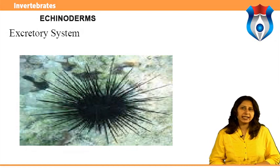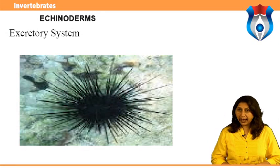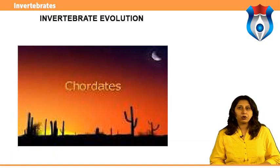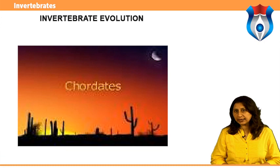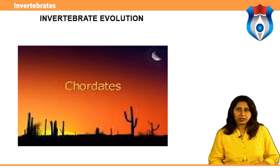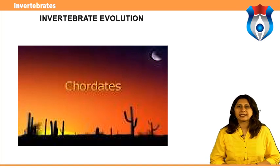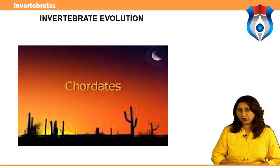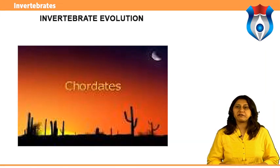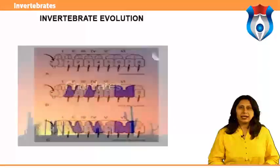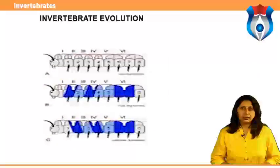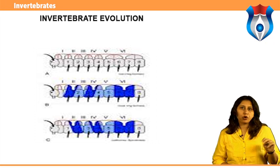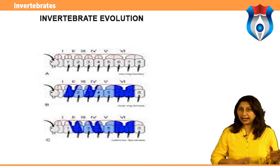Chordates are coelomate animals possessing a supporting rod or notochord, a single hollow dorsal nerve cord, metameric segmentation, pharyngeal gill slits at some stage of their lives, and typically a post-anal tail. There are two kinds of chordates: vertebrate chordates and invertebrate chordates.